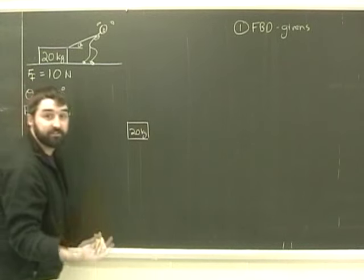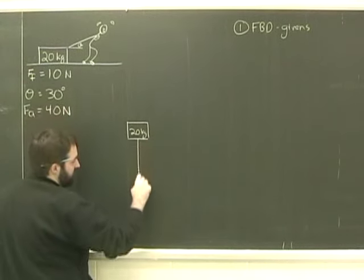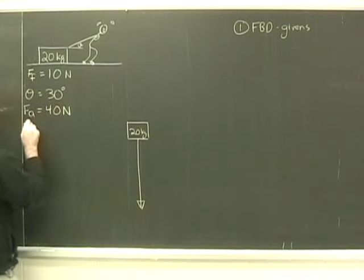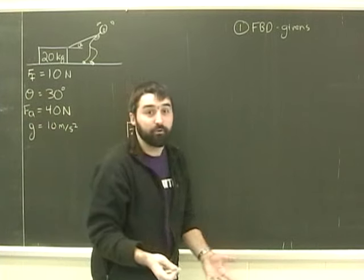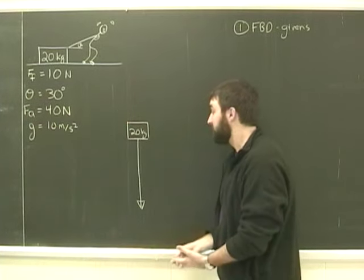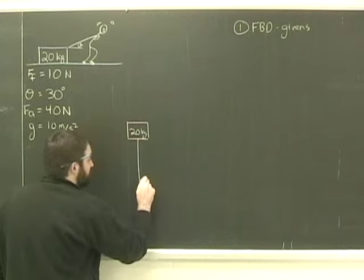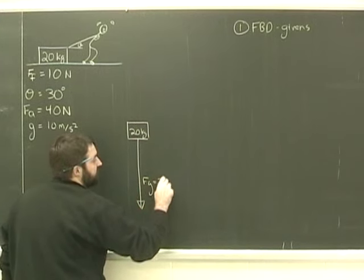First question, is there gravity? Well of course there is. It's going to be down. Just to make things easier, I'm going to assume that g is 10 meters per second instead of 9.8, just to make the numbers work out more smoothly. In which case, Fg will be equal to 200 N.